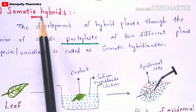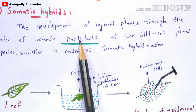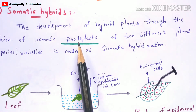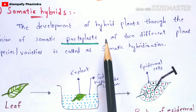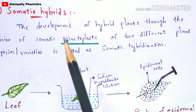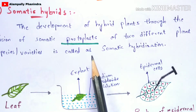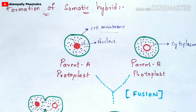Now we look at what these protoplasts do in the formation of a somatic hybrid. The development of a hybrid plant occurs through the fusion of somatic protoplasts. These somatic protoplasts undergo hybridization to form a hybrid, which is called a somatic hybrid, and the somatic hybrid is used for the formation of a hybrid plant.